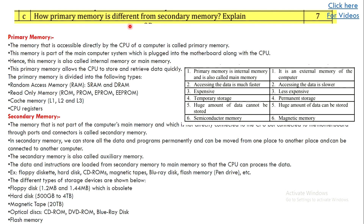The next question asks how primary memory is different from secondary memory, and also asks you to explain both. Just writing the differences is not enough — you should also explain them. First explain what primary memory is and what secondary memory is, then write a difference table listing the distinctions. Following this format, with explanation plus examples and a difference table, should fetch you seven marks.